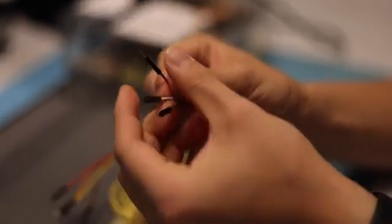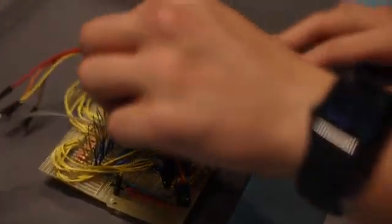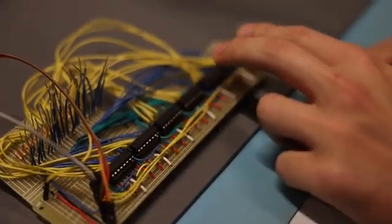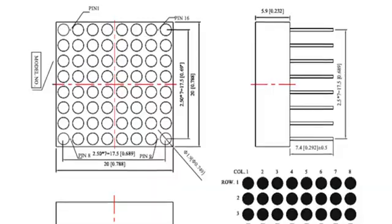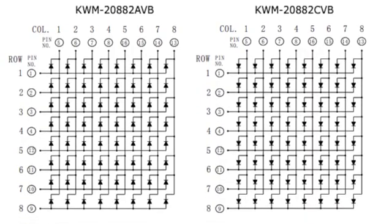The shift registers are implemented in sets of two where each set corresponds to rows and columns for one display. Next we attach the outputs of the shift registers to the displays using the documentation provided. Now we just have a coding problem to solve in order to produce a useful output.